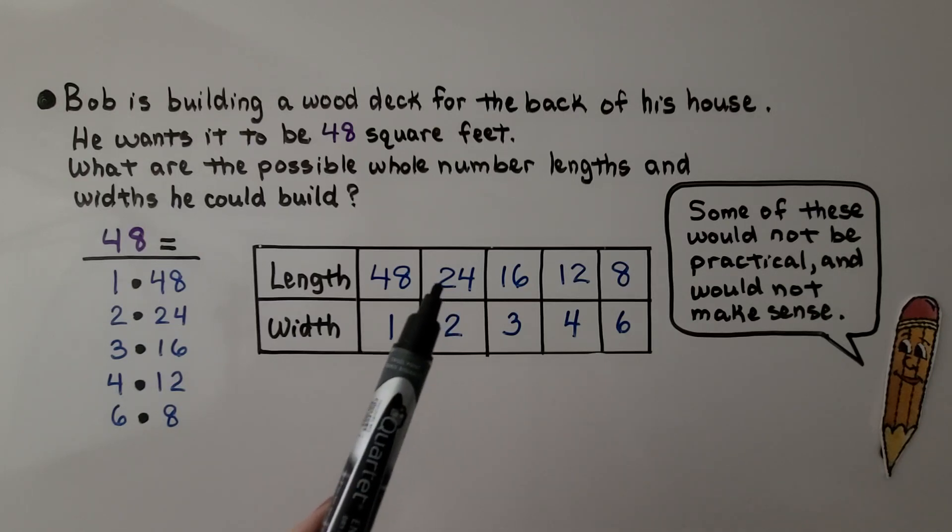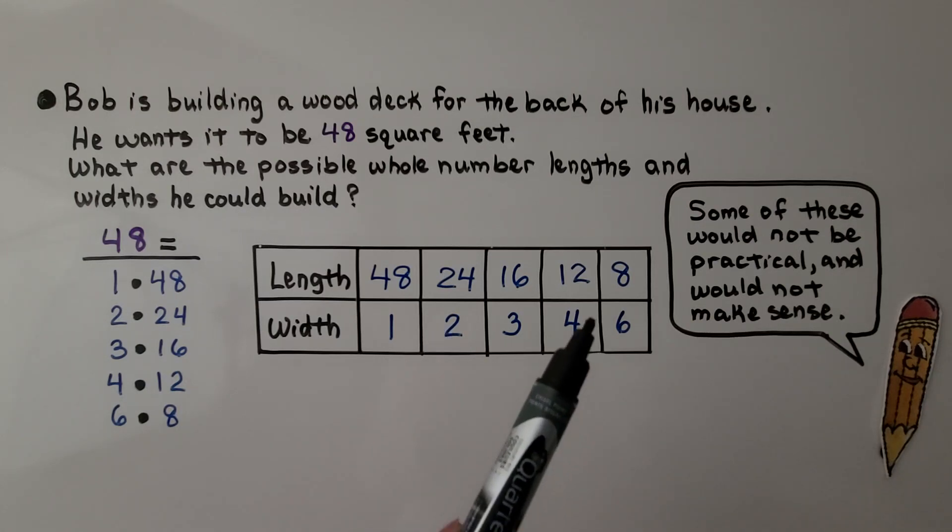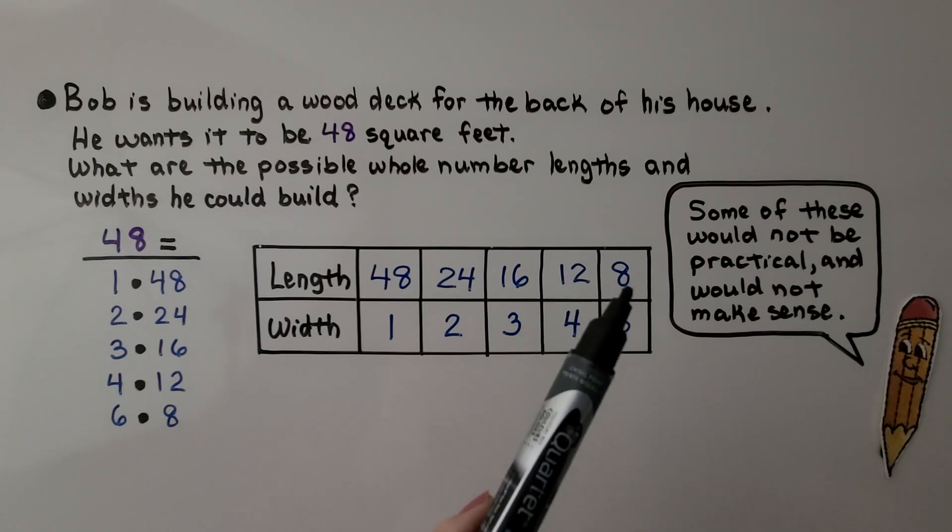And even 24 feet long and 2 feet wide doesn't sound right. I think he would probably be better off with 12 feet long and 4 feet wide or 8 feet long and 6 feet wide. That would probably make more sense.